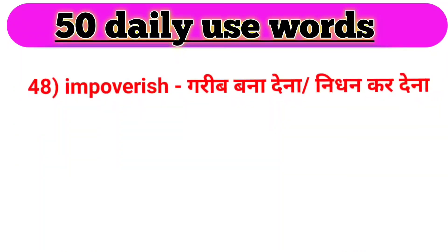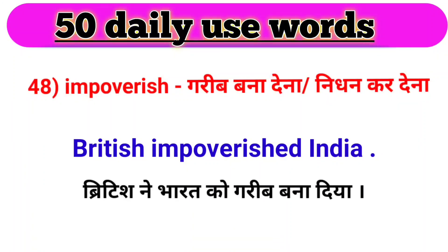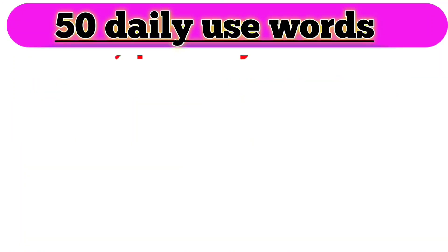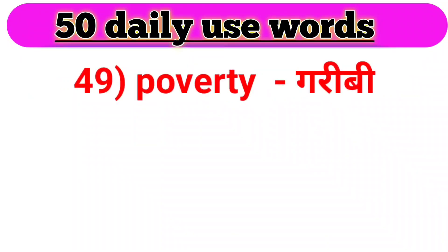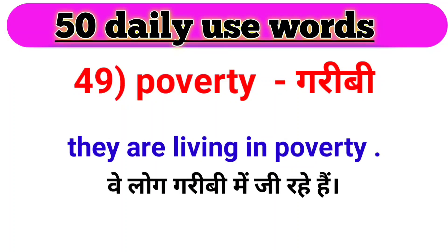Next word, we have impoverish. Impoverish ka matlab hota hai garib bana dena ya nirdhan kar dena. For example: British impoverished India. British ne Bharat ko garib bana diya. Next word, we have poverty. Poverty ka matlab hota hai gareebi. For example: They are living in poverty. Wee loog gareebi mein ji rahe hain.